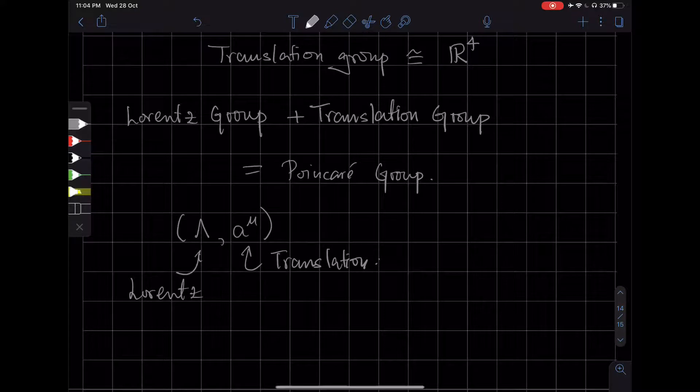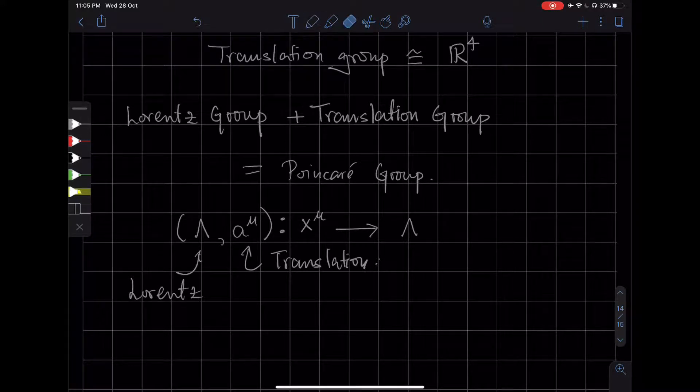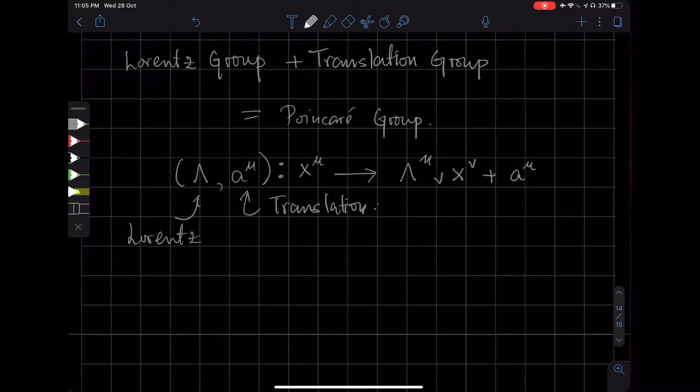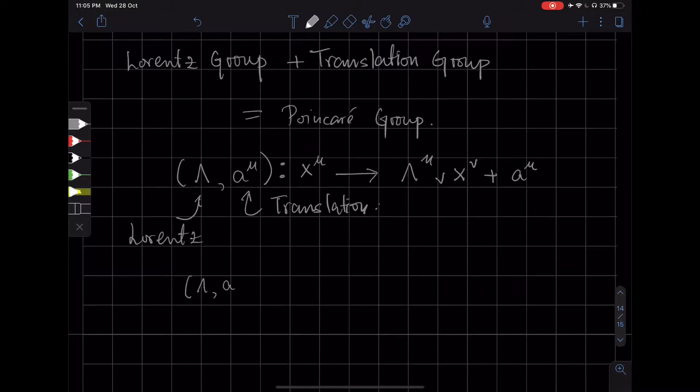And they act on some event x mu in the following way. You first apply the Lorentz transformation on your coordinates, and then you add to it the translation. Symbolically, we can write this in a neater form, so we can suppress the indices. This acts on x in the way where lambda acts on x, and then you add a.